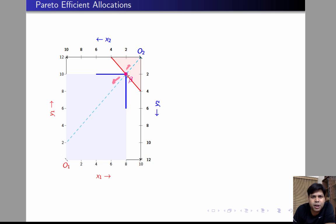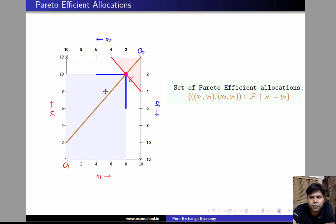And not only beta — this reasoning holds good for any point lying on this 45-degree line. So all the points lying on this line are efficient. We can conclude that the set of efficient allocations are all those points lying in the Edgeworth box that satisfy the property that x2 equals y2. This is the brown line here. Thank you.